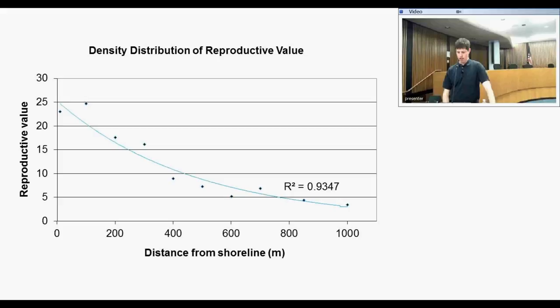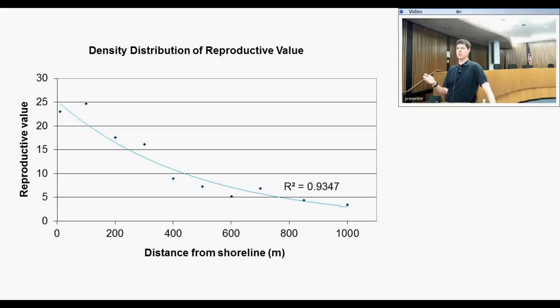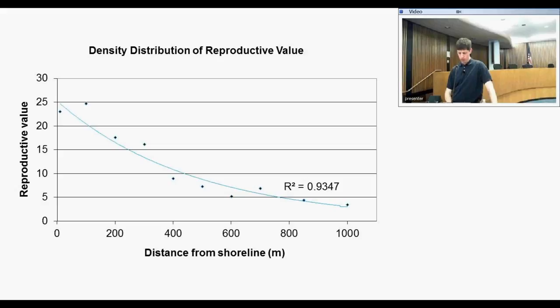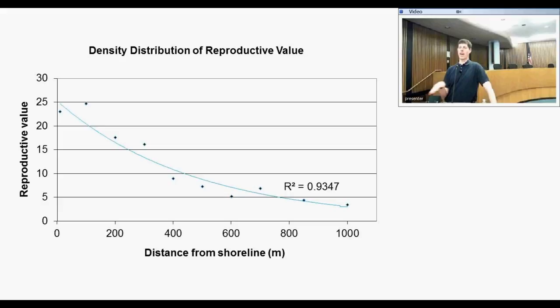If you take the three density curves and combine them with this reproductive value function, it fits remarkably well to an exponential decay function, matching our expectation — with random migration from a point source, you should get exponential decay, and in our case the point source is the breeding pond. Dispersal isn't actually random because salamanders make directed movements, but it still fits really well to that null expectation. With the new demographic model, it fits slightly better than with the previous one. We have data from two different breeding ponds and eight different years, and want to account for the variation both in space and time.